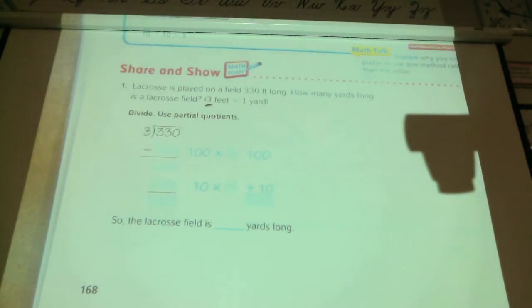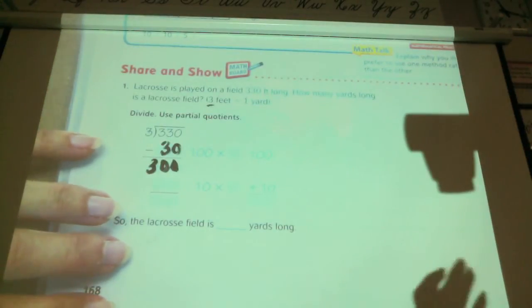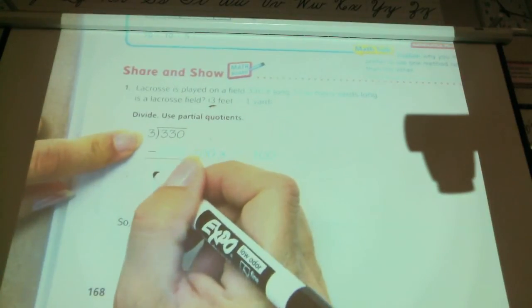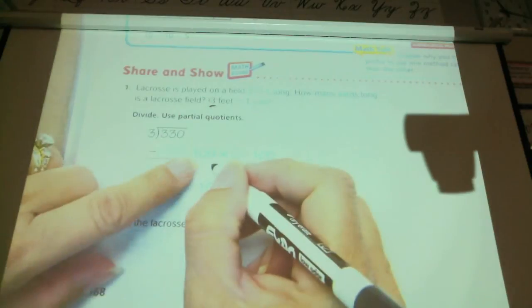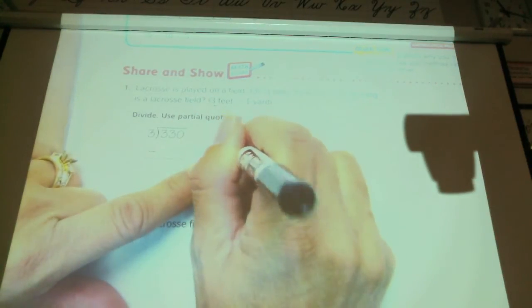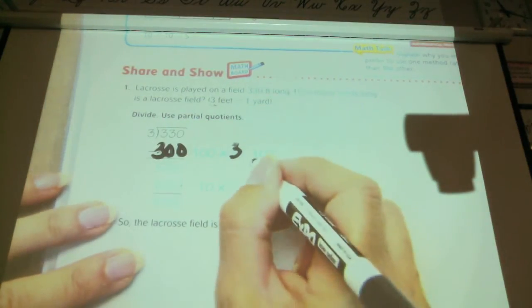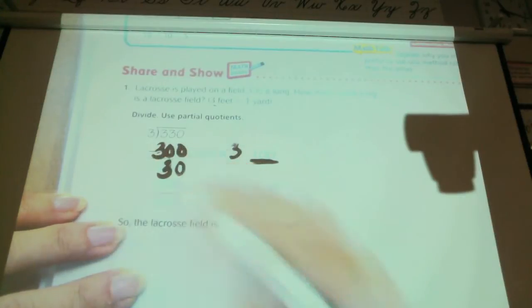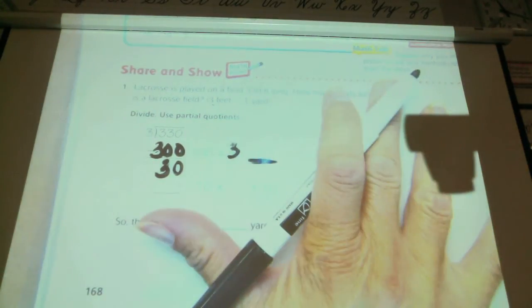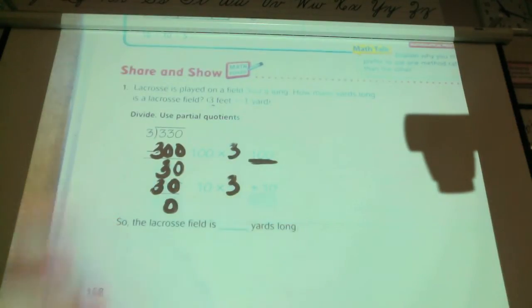They have the division problem set up for you here. Now we can do 10 times 3, right? If I did 10 times 3, what would I get? 30. And then I'm going to subtract and I'm going to have 300 left and I'm going to keep going forever. But I have 300. And I know that I can multiply 3 times 100 and get 300. So instead of doing by 10s first, I'm just going to go ahead and go by 100s. Because I know I can do 100 times 3 and that equals 300. So now I've kept track that I've used 100 so far. I'm going to subtract. And how much do I have left? 30. How many times does 3 go into 30? 10. So I can do 10 times 3 and I get 30. I subtract and I end up at 0.